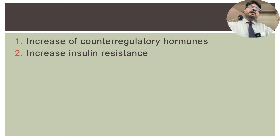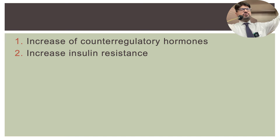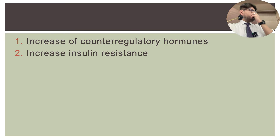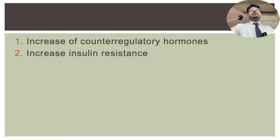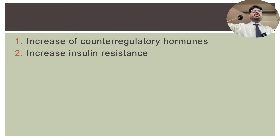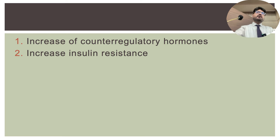The elevated blood sugar perpetuates the infection and also stunts the beta cells, producing less insulin. This creates a negative vicious cycle where the infection drives up blood glucose, glucotoxicity perpetuates the infection, and so on. This cycle needs to be broken. You'll often find that when you successfully control blood sugar, the patient's clinical condition also improves simultaneously.